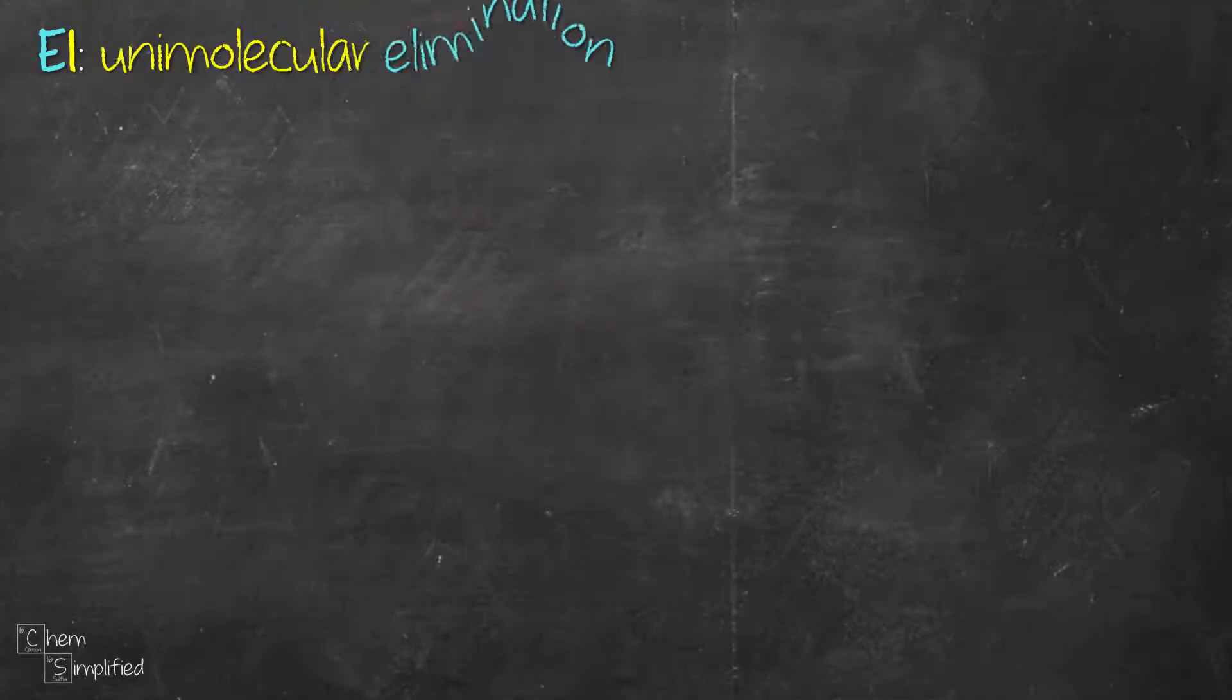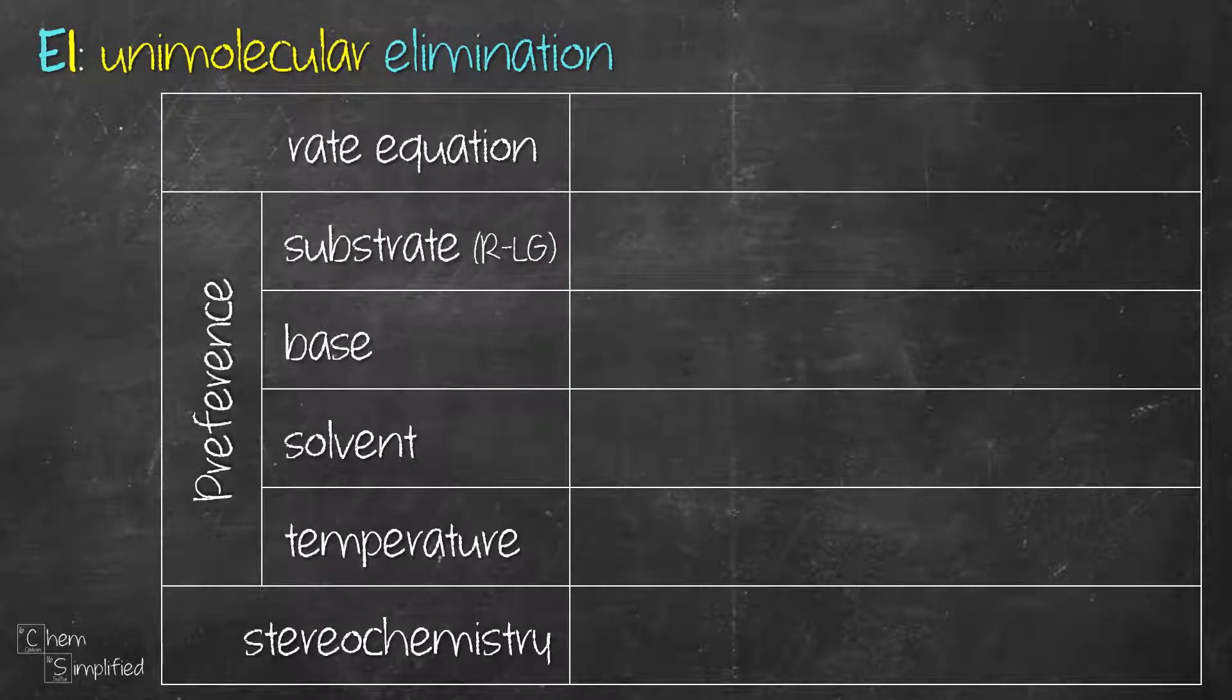There are two components that are involved in an elimination reaction. One of them is the substrate that has an alkyl group attached to a leaving group, R-LG, and then the other one is a base.